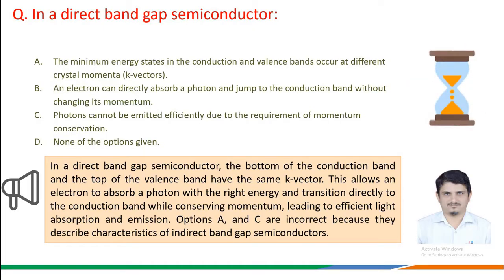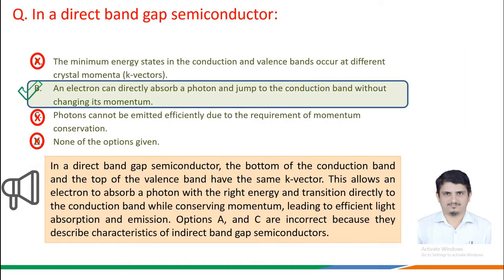The correct answer is Option B: an electron can directly absorb a photon and jump to the conduction band without changing its momentum.